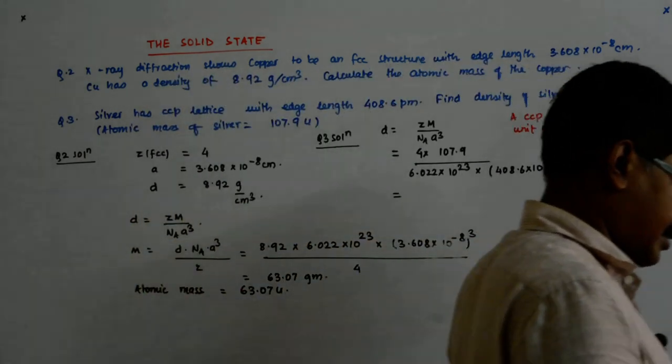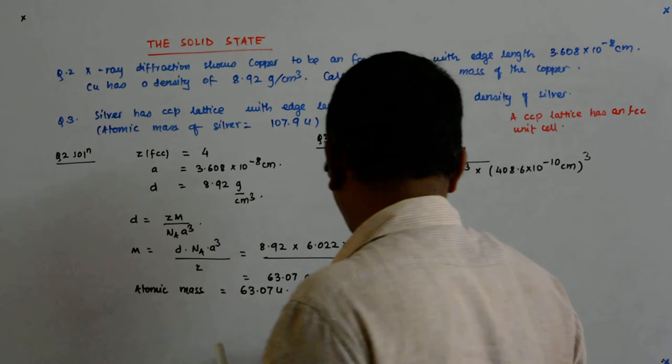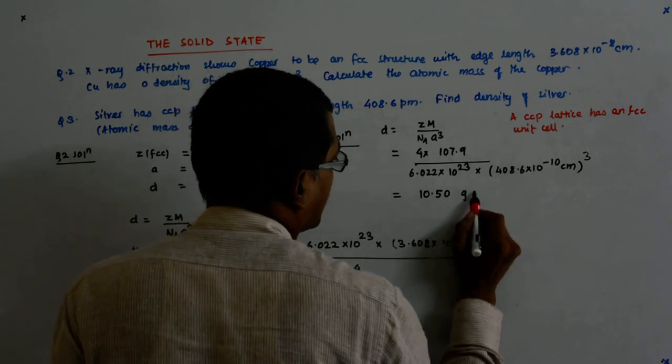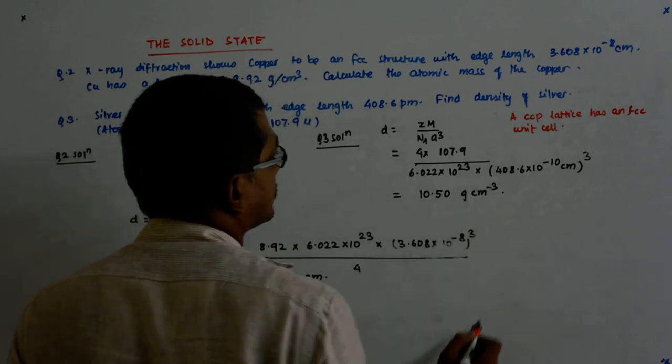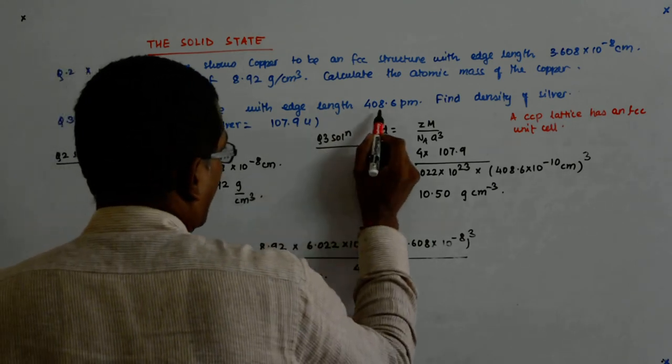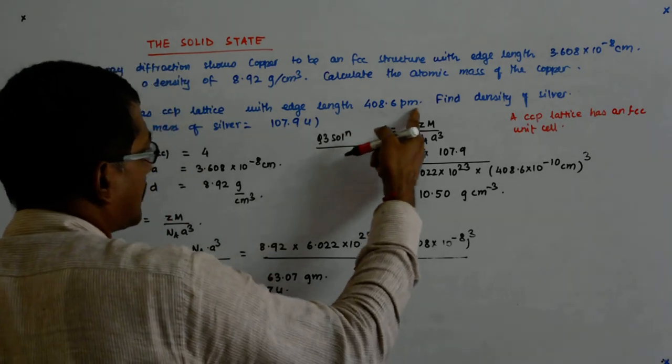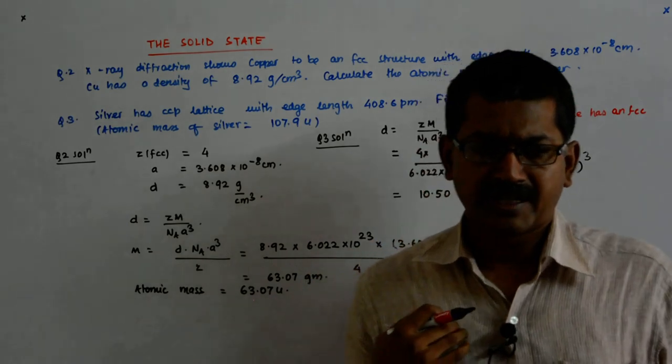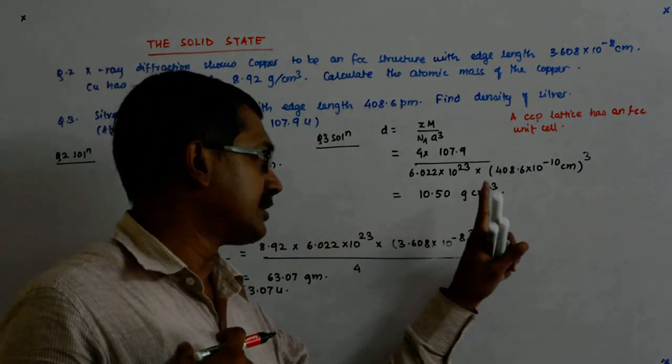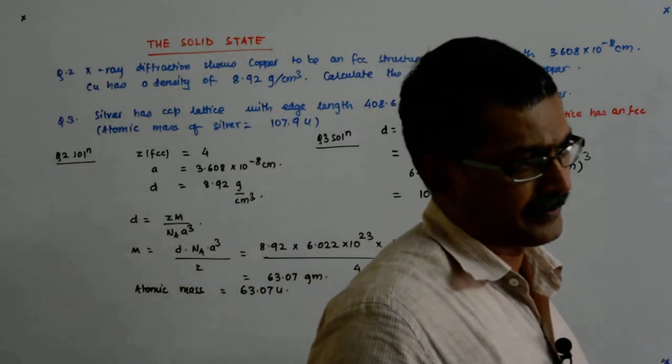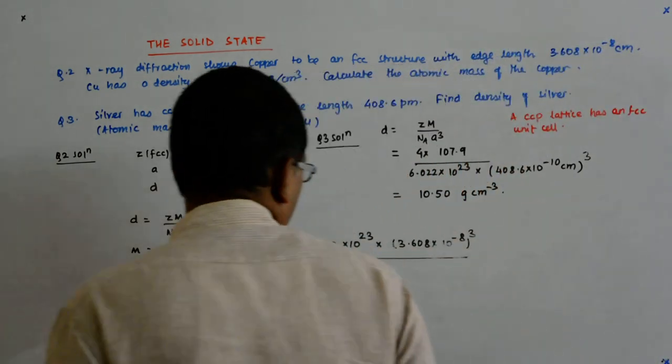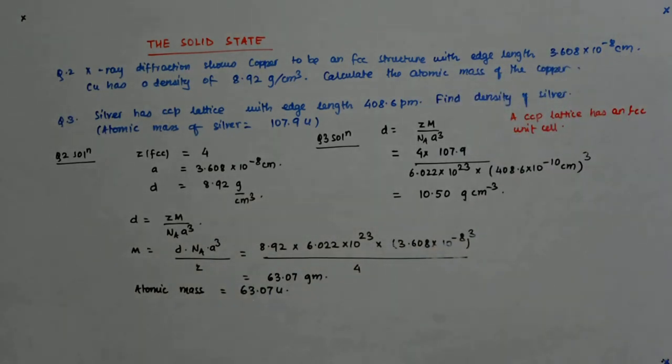So, that gives me 10.50 grams per centimeter cube. Look, I have four significant figures given. So my answer should be in four significant figures, right? The least significant figure. Assuming that Avogadro's number is an exact number and has its significant figures equal to infinity, okay? So it should be 10.50 grams per centimeter cube, fine?